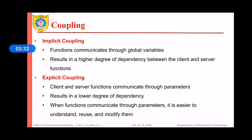There are two types of coupling. The first is implicit coupling, where functions communicate through global variables. It is very difficult to determine which function uses which global variables and at which time, resulting in a higher degree of dependency between client and server functions. The second type is explicit coupling, where client and server functions communicate through parameters. This results in a lower degree of dependency, as it is easier to understand, reuse, and modify the functions.